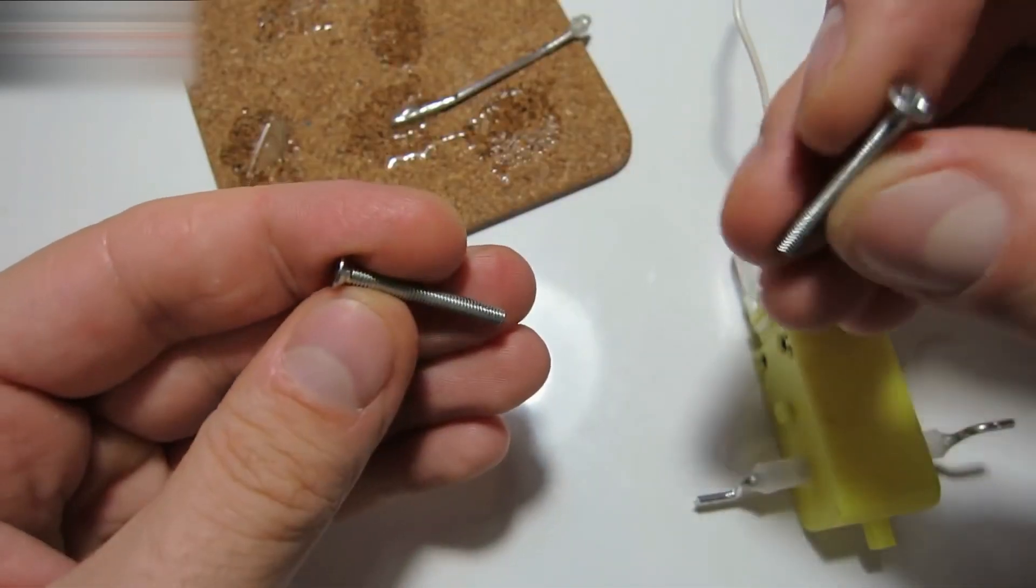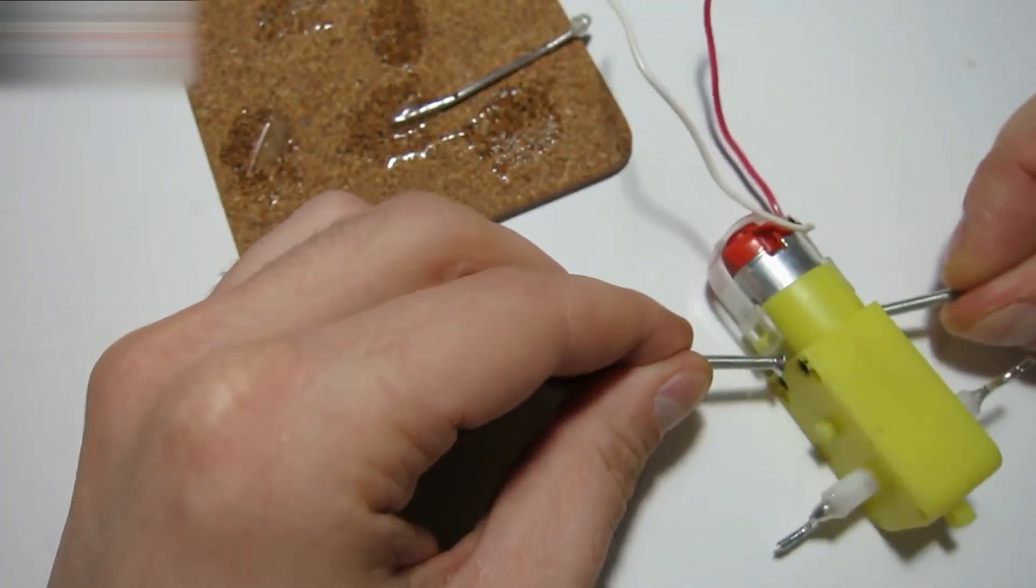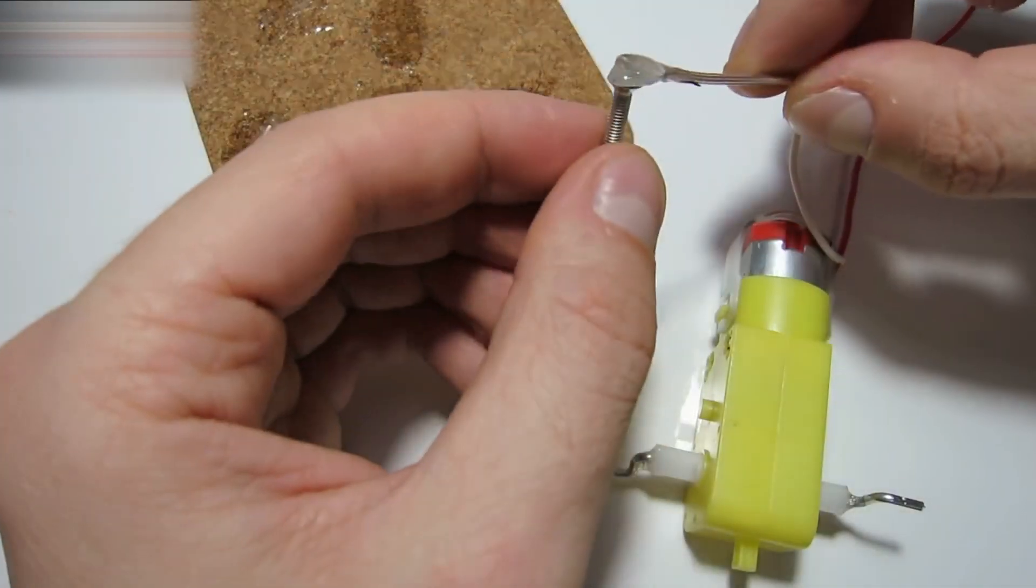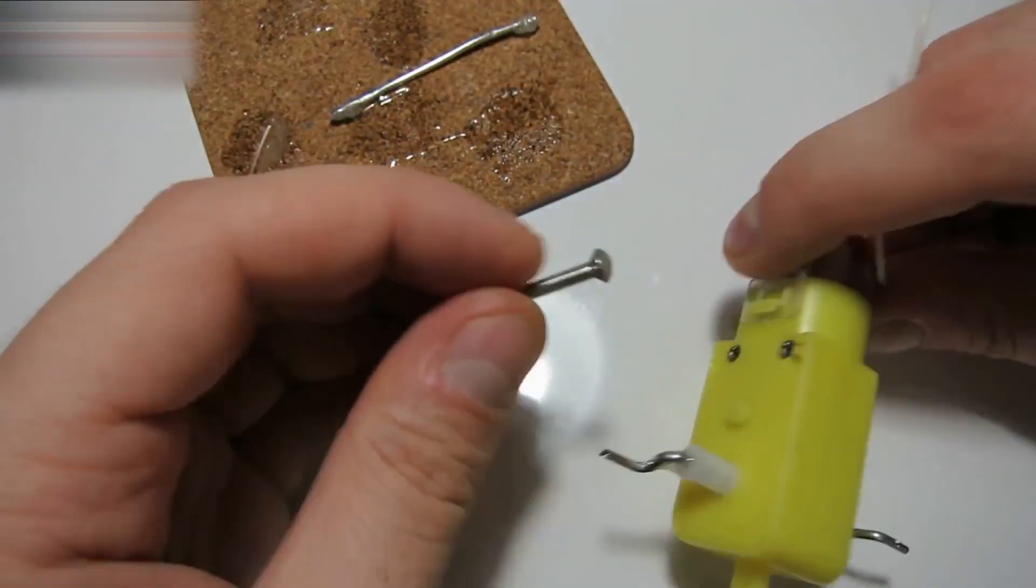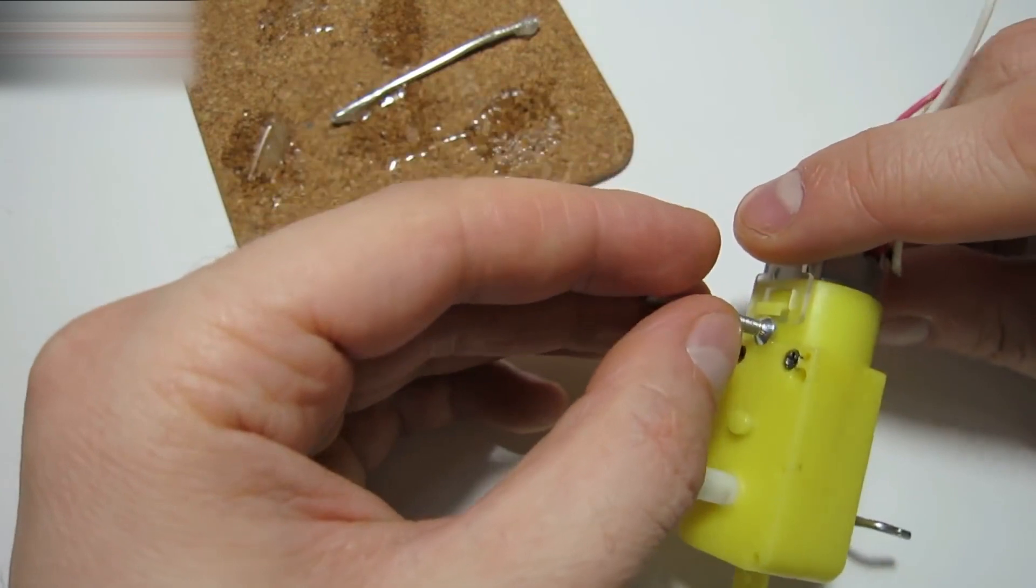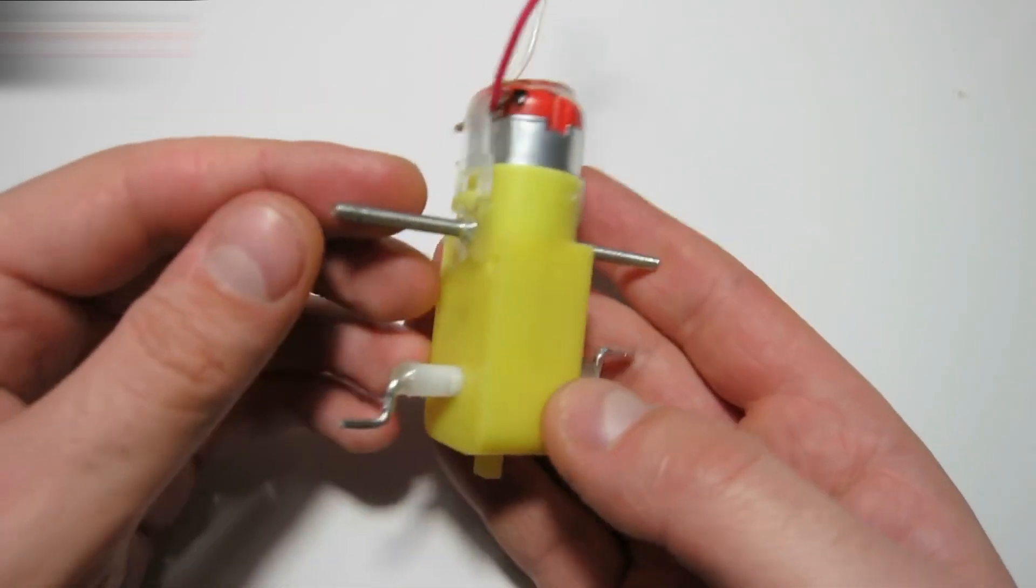Now, take two 25 millimeter screws and glue them like this. Here's what you should get.